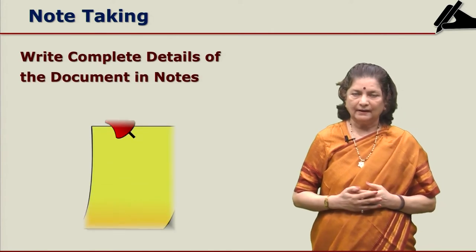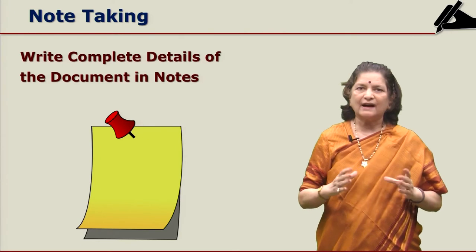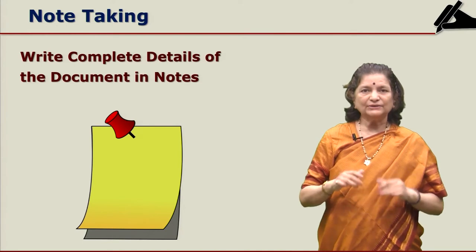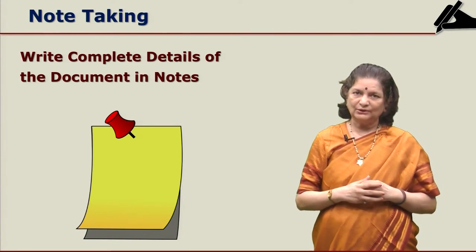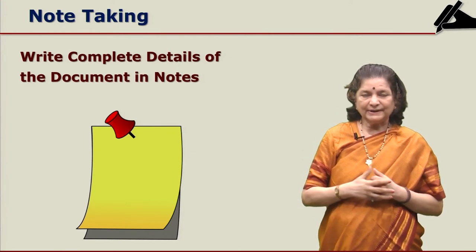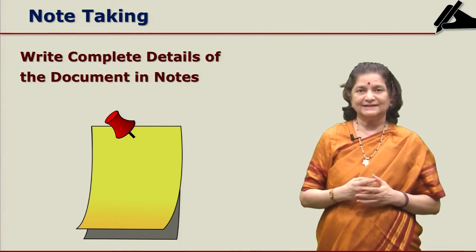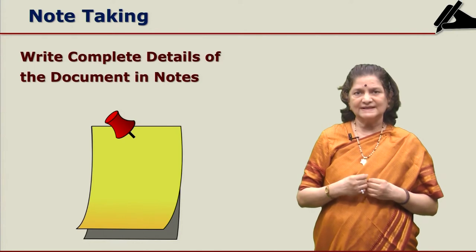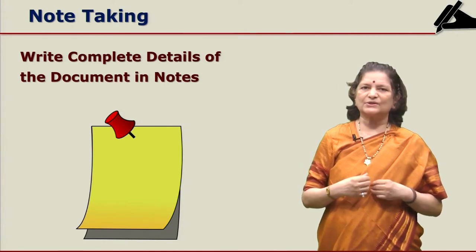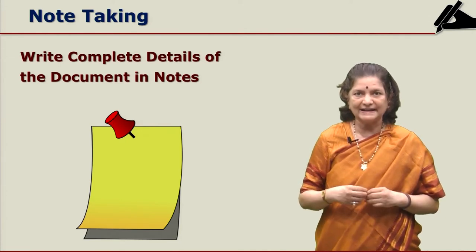Note taking. You can take a 5 by 3 card or you can take your computer and take down the notes regarding the details of the book or the journal article or the thesis. Now here all the important details like author, title, journal article's name, then journal's name, then volume number, issue number, publisher, place of publication that we are going to see what details we are going to add in this card.